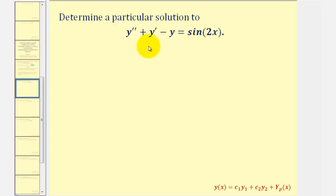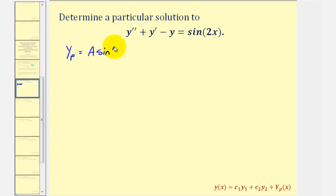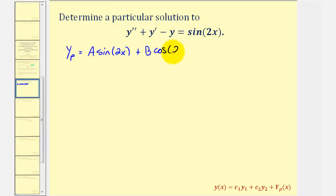So the first thing we want to do is guess a form of the particular solution. Because g of x is equal to sine 2x, we might think that y sub p could just be some constant A times sine 2x. But the problem is that the derivative of sine also involves cosine, so our particular solution could also contain cosine 2x. So we're also going to include plus a constant B times cosine 2x.